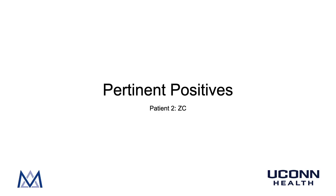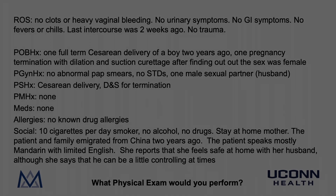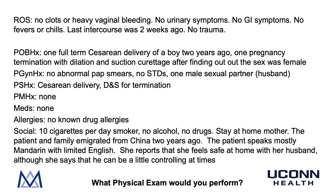Let's see what pertinent positives we have for our patient, ZC. In review of systems, she has no clots or heavy vaginal bleeding, no urinary symptoms, no GI symptoms, no fevers or chills. Her last intercourse was two weeks ago and she's had no trauma. Her previous obstetrical history is one full-term cesarean delivery of a boy two years ago and one pregnancy termination with dilation and suction curettage after finding out the sex was female. Her previous GYN history includes no abnormal pap smears, no STDs, and one male sexual partner who is her husband. Her previous surgical history includes a cesarean delivery and D&C for termination.